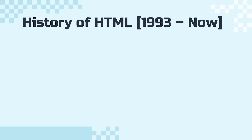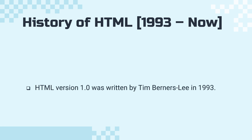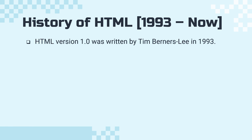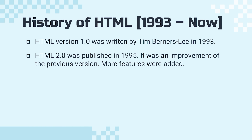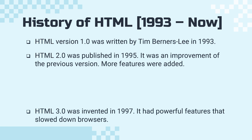Now, the history of HTML, which started in 1993. Version 1.0 was written by Tim Berners-Lee in 1993. In 1995, HTML 2 was written. It was an improvement of version 1, and more features were added.